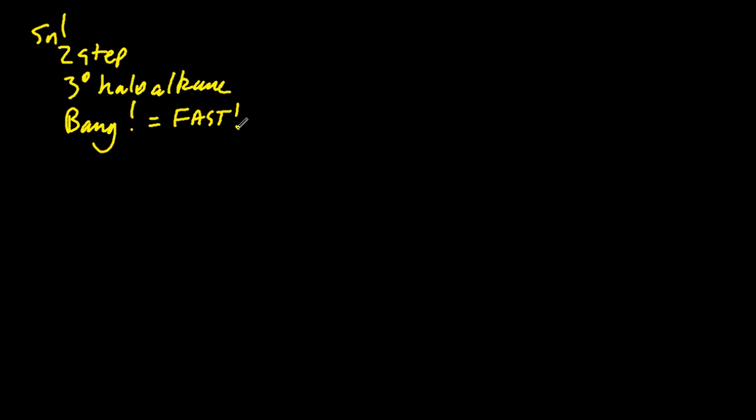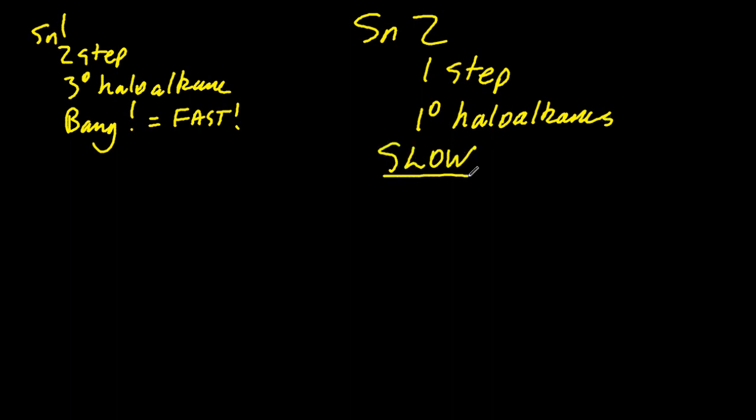And so from that you should be able to work out that SN2, well that's a one-step process with primary halo alkanes and that one's the slow one. So we're having to look at SN2 today.